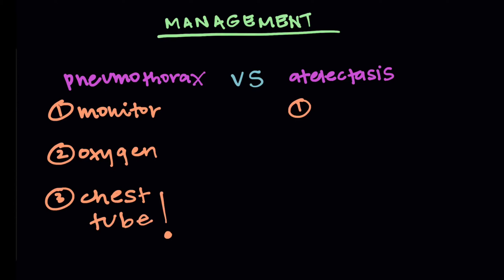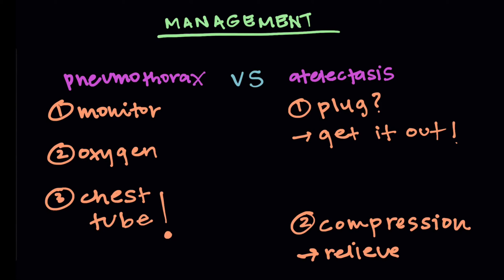Alright, so for atelectasis, it kind of depends what's going on. So if it's a plug, you've got to get it out. Get rid of the plug. And on the other hand, if it is a chest wall issue or obesity or something, essentially compression, pleural effusion, or the patient's not taking big enough breaths because of pain, for example, then you need to relieve that compression. So whether it's taking out fluid of the effusion, or giving pain medicine, or losing weight even, or things like that.